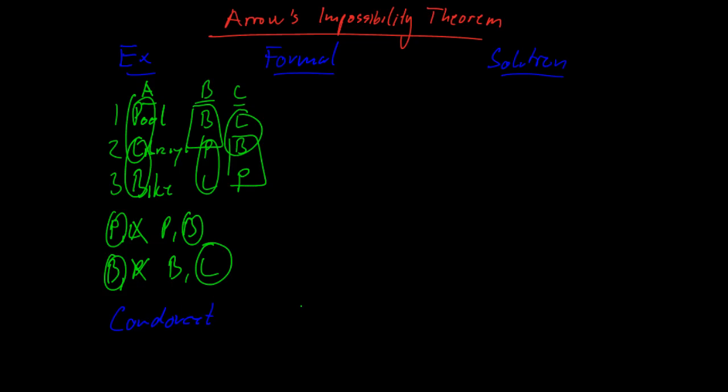But the more formal problem is what we call Arrow's Impossibility Theorem, which says that under certain conditions, a voting system in which you rank certain alternatives, will not produce a unique alternative or unique solution. So what conditions are we talking about then?